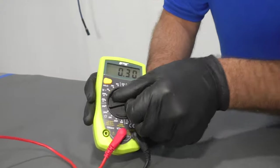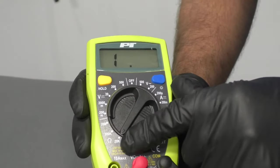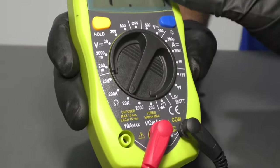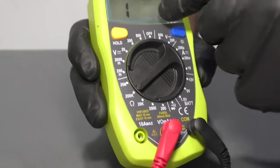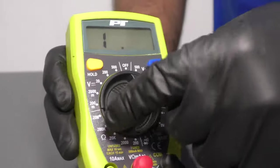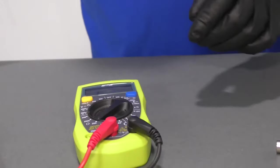We're going to switch this to 20K for the ohms. The difference between these other settings is it just moves the decimal point, so 20K is a good place to start.